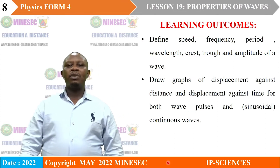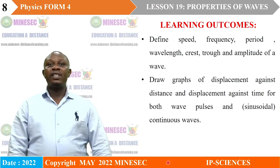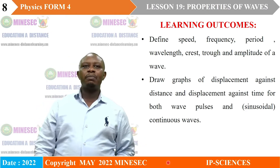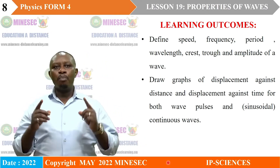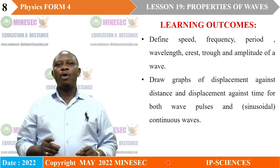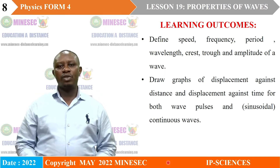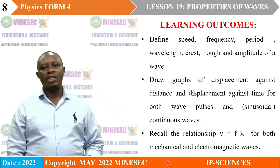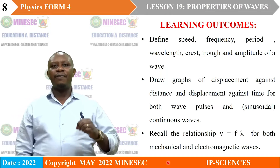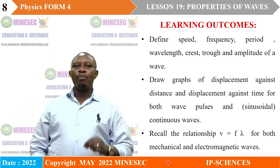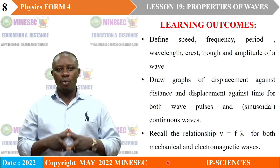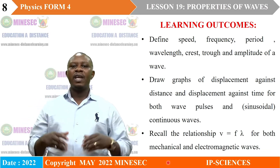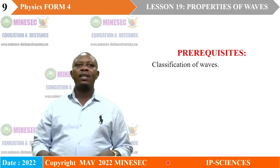Learners are expected to be able to draw graphs of displacement against distance and displacement against time, for both wave pulses and continuous waves. Learners are also expected to derive the relationship V = Fλ, for both mechanical and electromagnetic waves — that is the relationship between the speed of a wave, its frequency, and its wavelength.